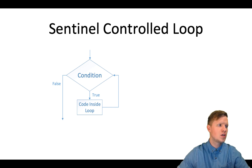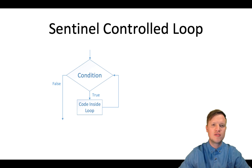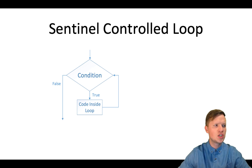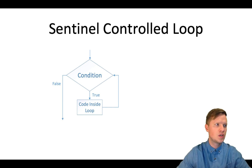Sentinel controlled repetition is sometimes called indefinite repetition, which is maybe a better way of explaining it — it's indefinite because it's not known in advance how many times the loop will be executed. It's a repetition procedure for solving a problem by using a sentinel value, also called a signal value, a dummy value, or a flag value, to indicate the end of data entry.